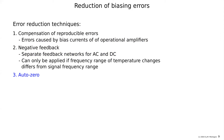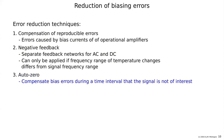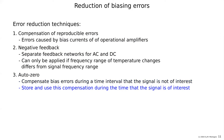Another AutoZero technique uses two amplifiers, switching between them. While one is processing the signal, the other is calibrating its offset and biasing errors. After it is calibrated, you switch back. This is done in modern AutoZero operational amplifiers, using two amplifiers alternately.